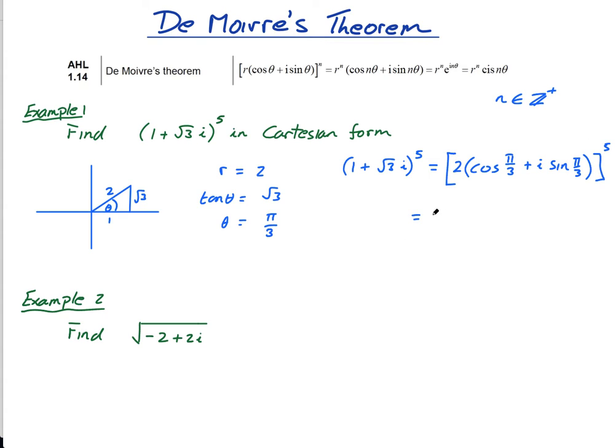So I get my 2 to the power of 5, and then this to the power of 5 becomes, and this is De Moivre's theorem, I multiply by the 5 here. So it's 2 to the power of 5 times cos, so I multiply the theta by 5, cos 5 pi over 3 plus i times sine of 5 pi over 3. So that's De Moivre's theorem to set it up like this.